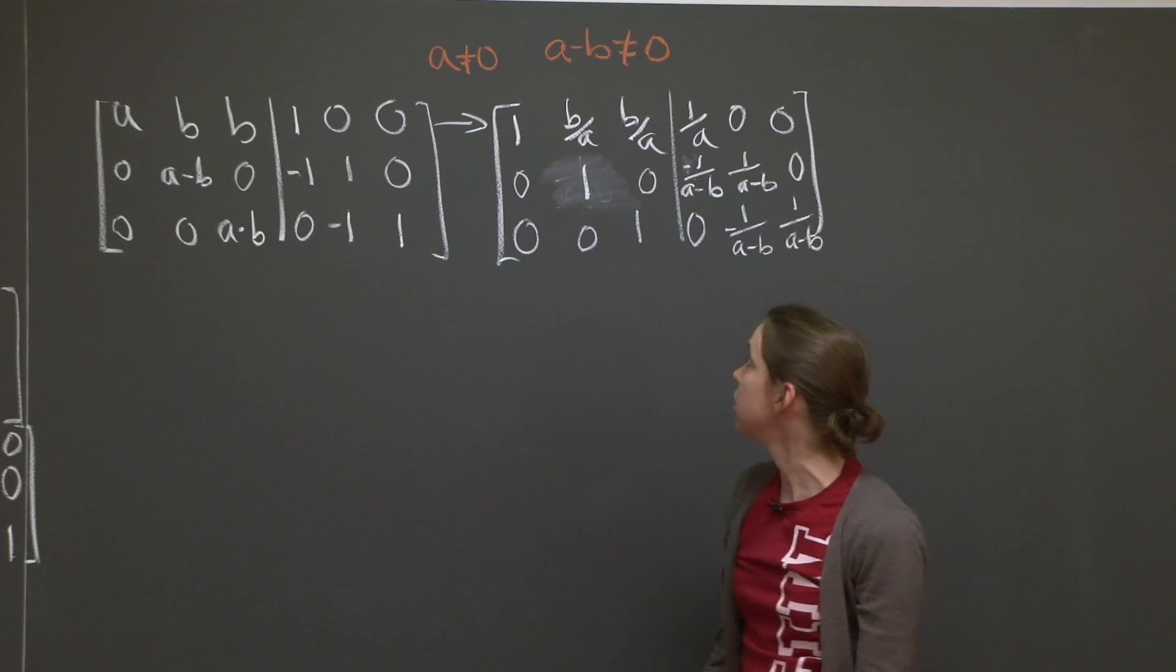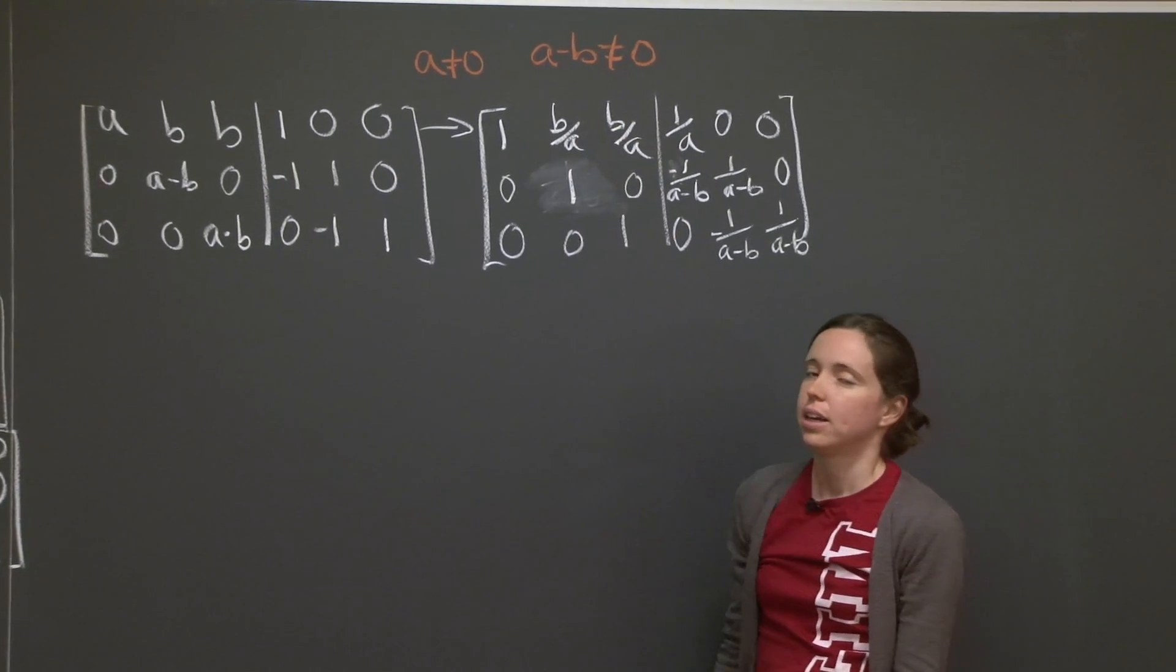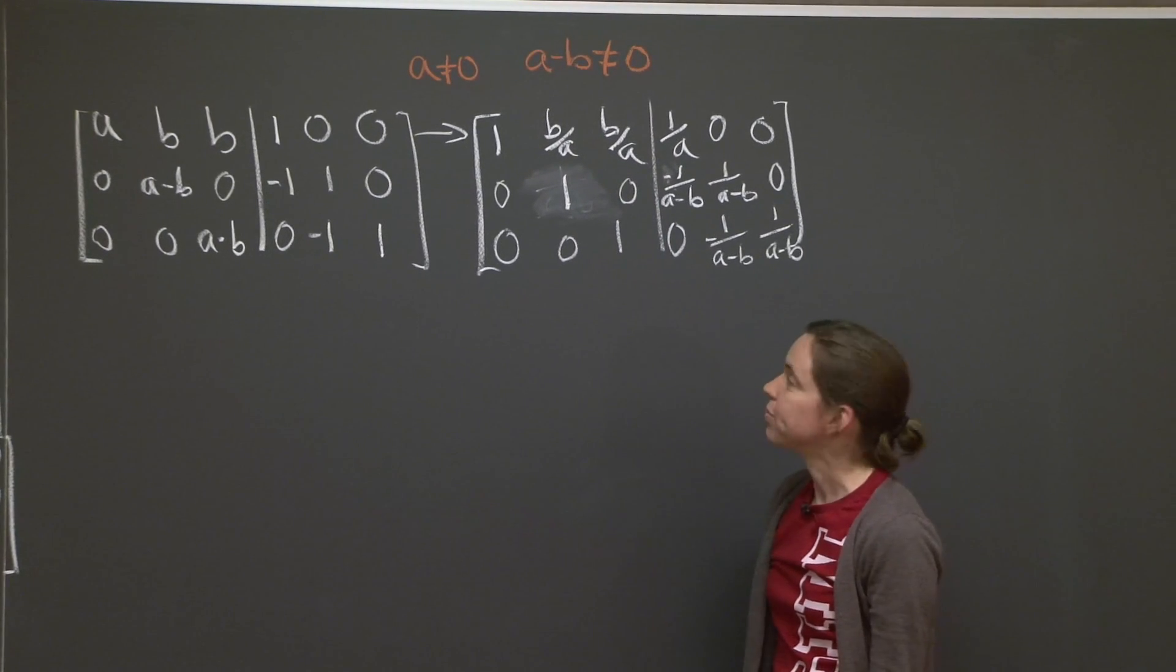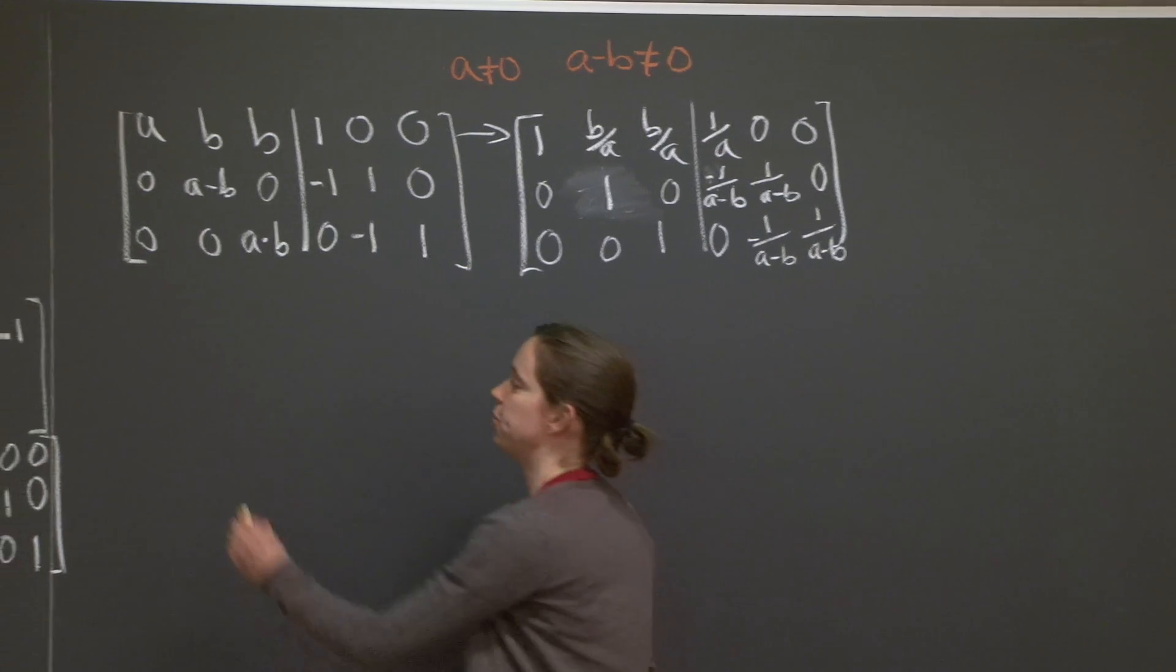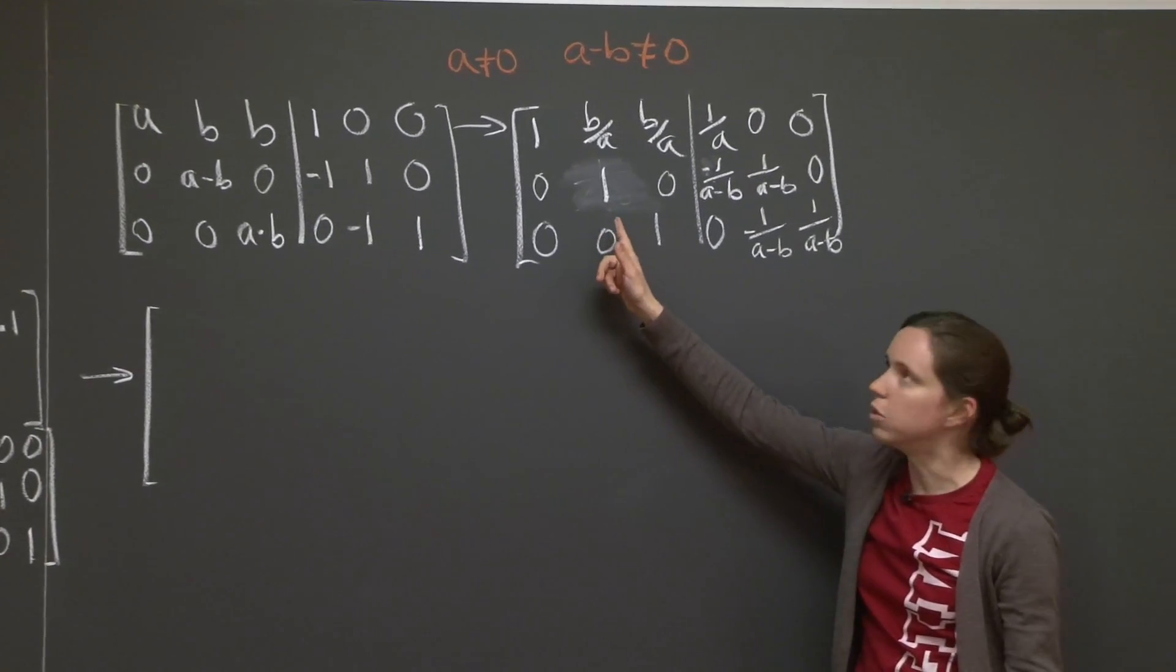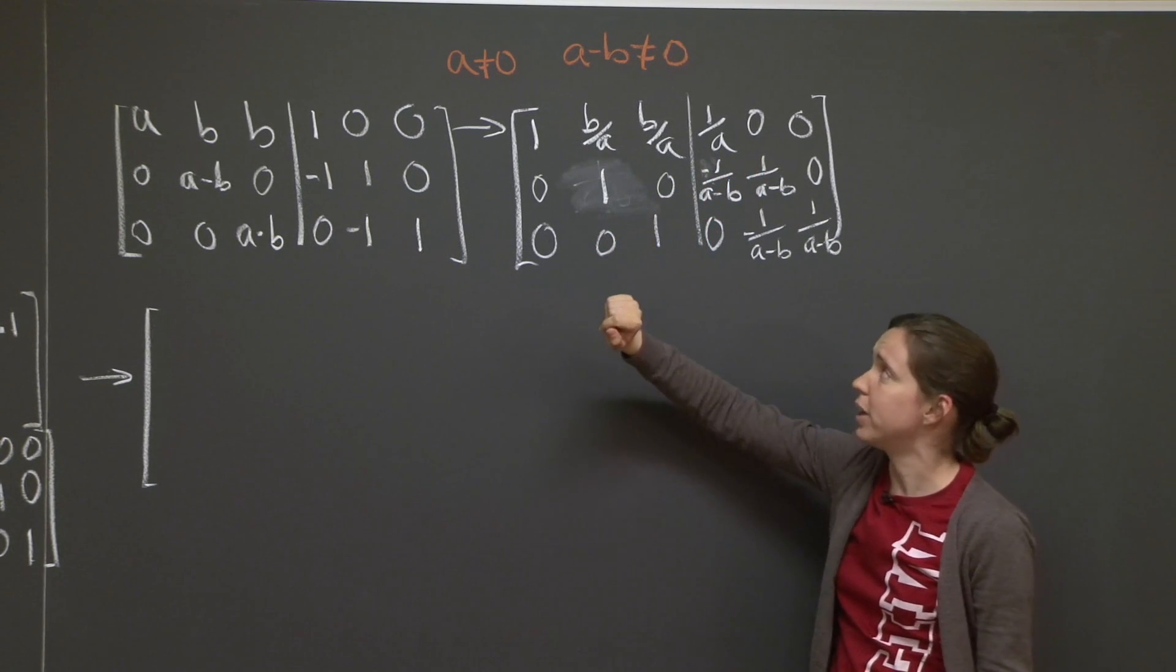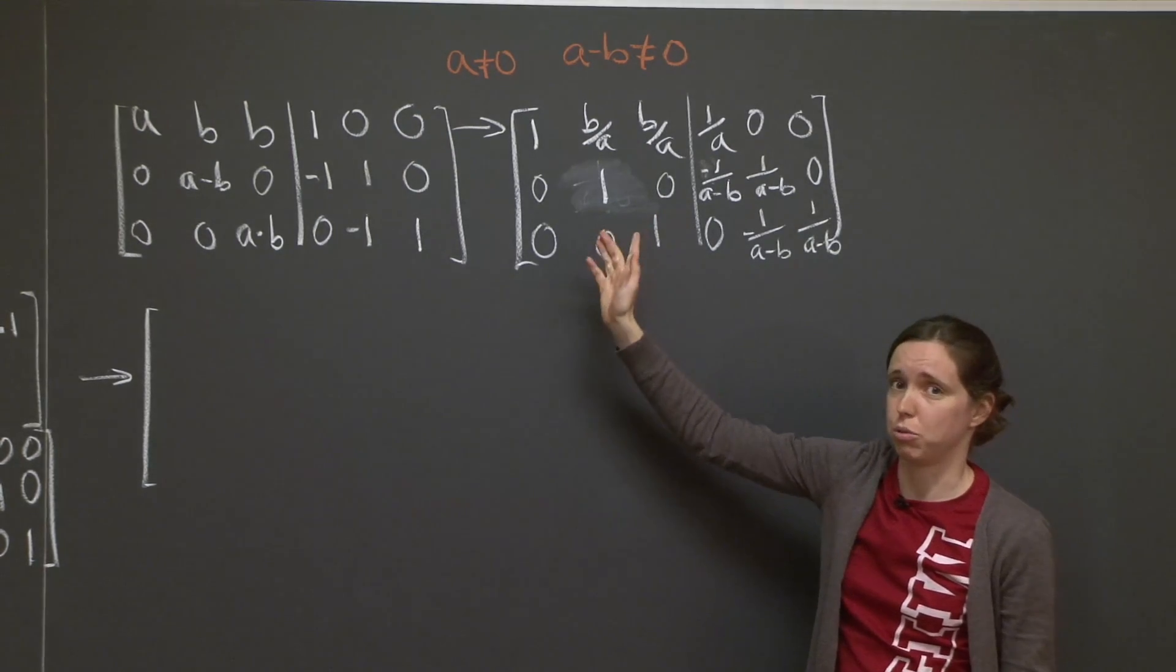All right, so not much left to do. We only have to eliminate b over a and b over a. That's a little bit computationally heavy. So what do you have to do? You just have to basically subtract, replace row 1 by row 1 minus b over a times row 2 plus row 3. Let me write that down.